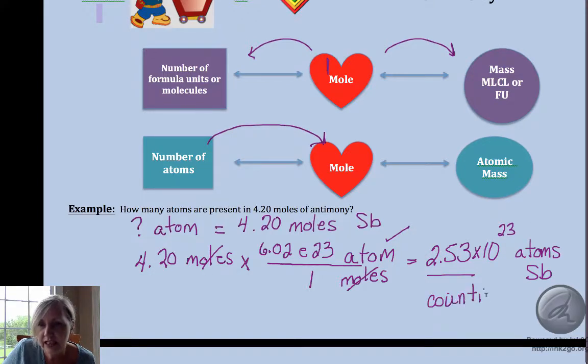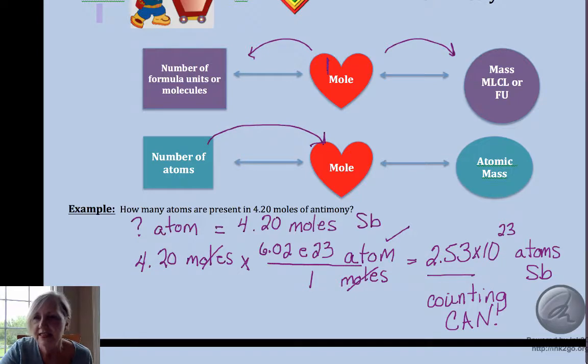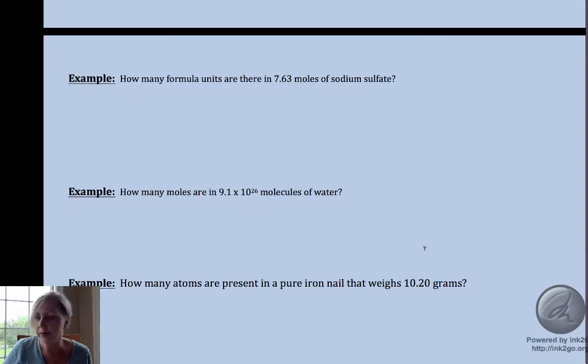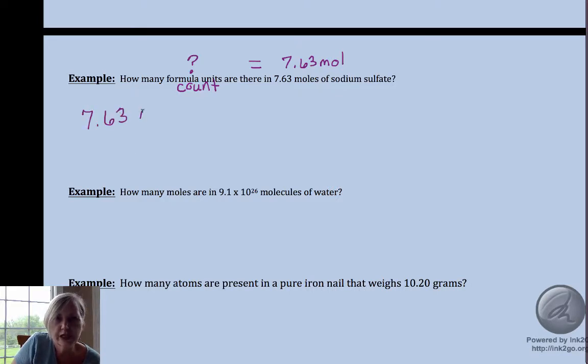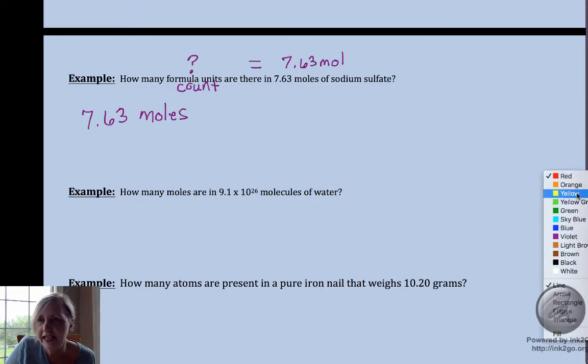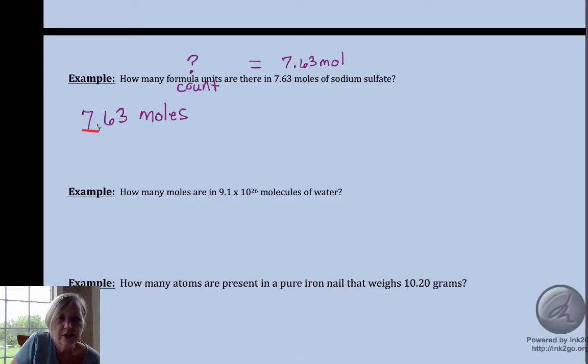Let's try another one. This one is formula units. Question mark formula units are equal to 7.63 moles. A formula unit is a count, so this is one step: 7.63 moles of sodium sulfate. You can also do it using the lines—some people like this railroad approach; it can streamline things.